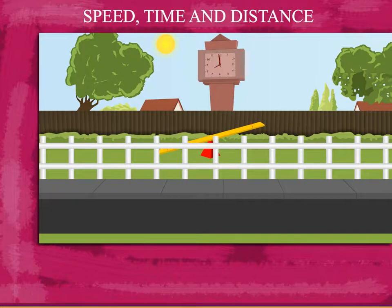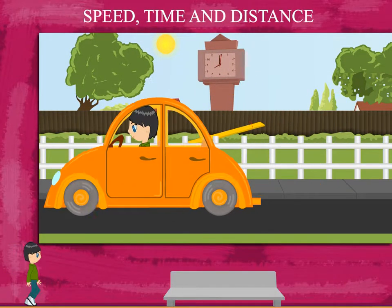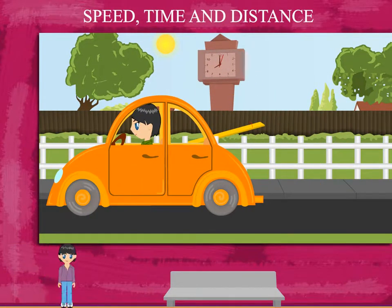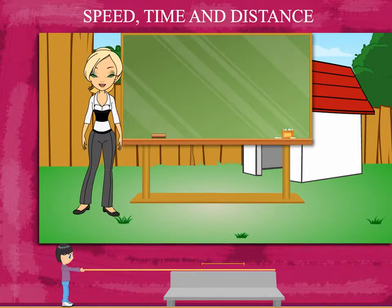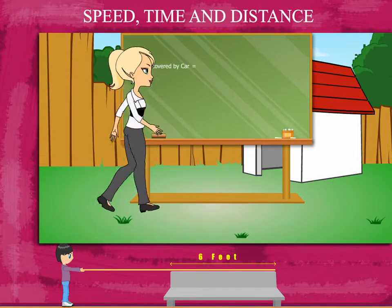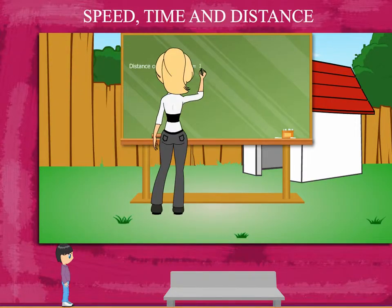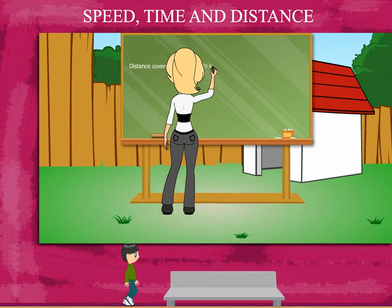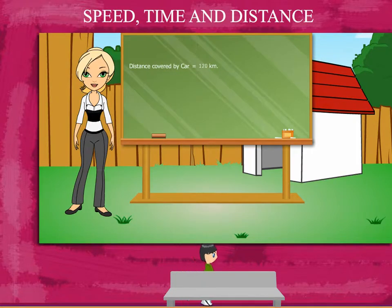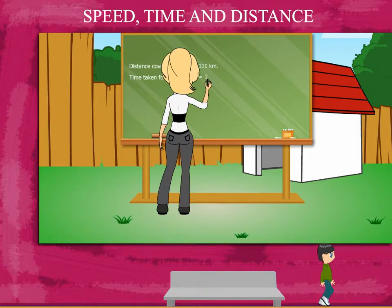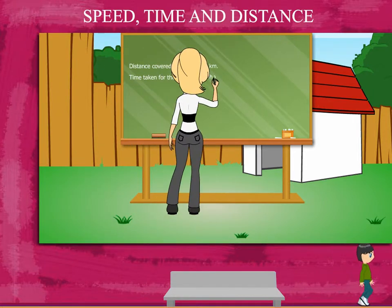Speed, Time and Distance. Judy drives his car to teacher Rosie's home. Rosie ma'am explains that Judy's car covered 120 km and he reached in 2 hours.